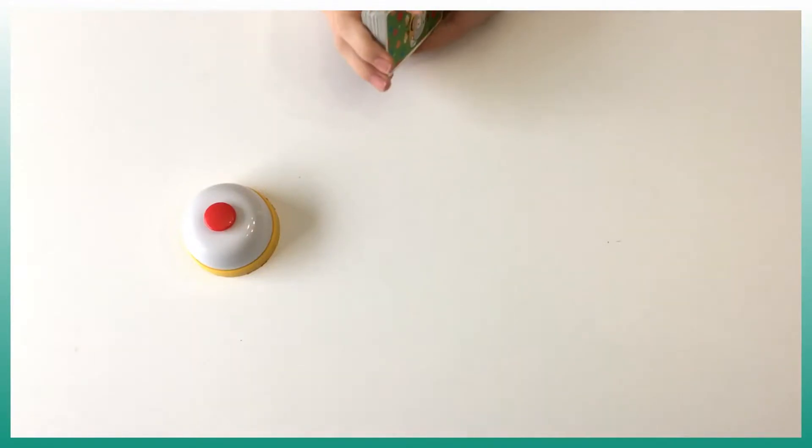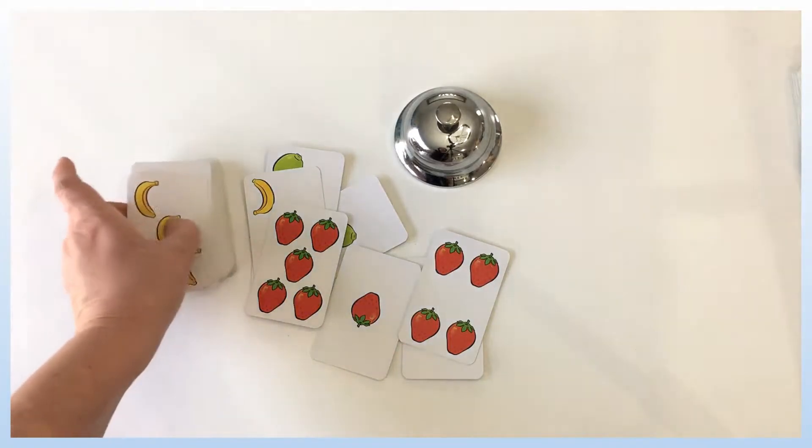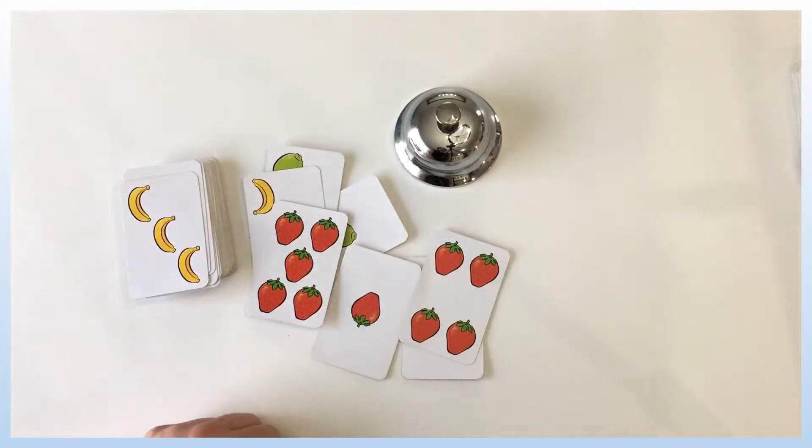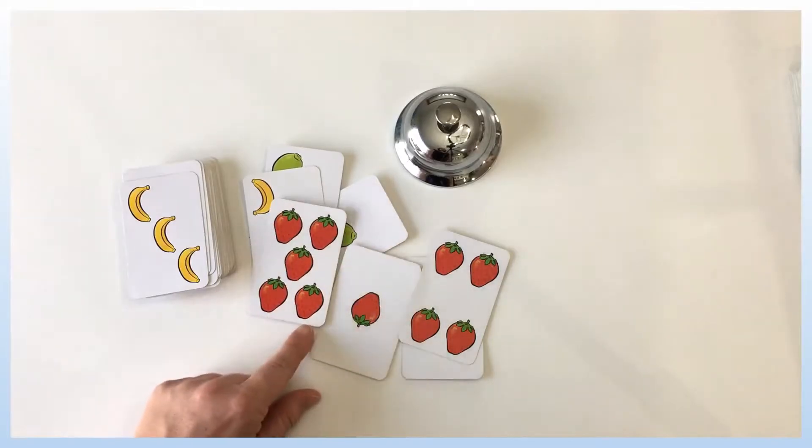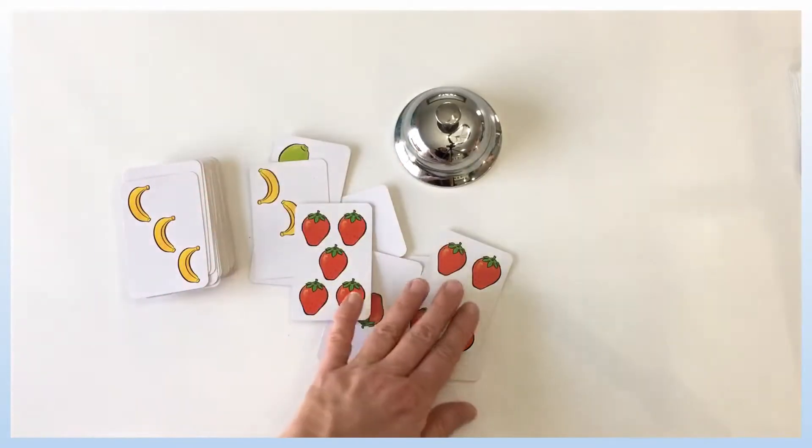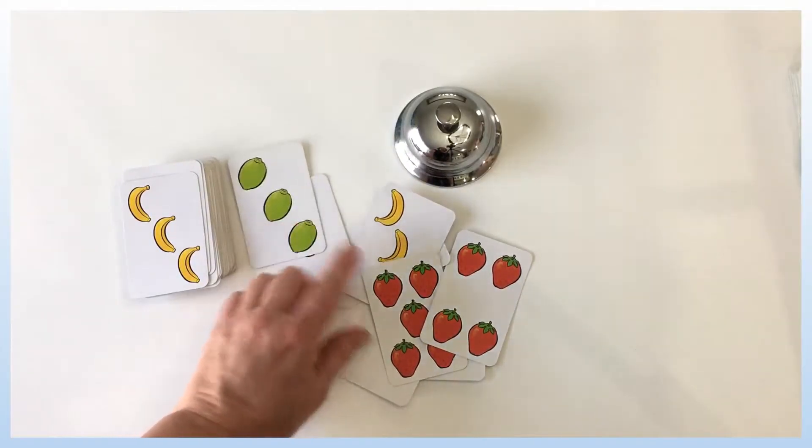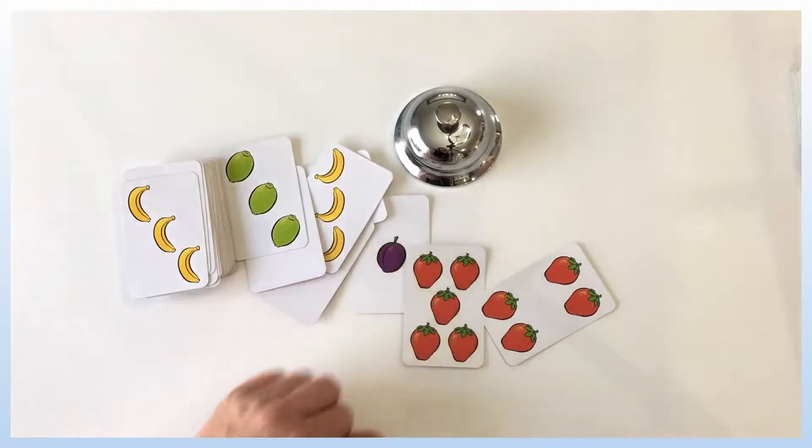So this is how we play Halligalli Jr. So Halligalli comes with multiple fruit cards and what we have to notice is the quantity of fruit on each card. For example, here we have five strawberries, four strawberries here, we have banana, lemon, etc. We have prunes here.